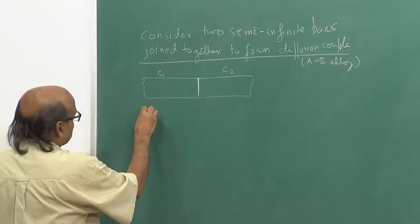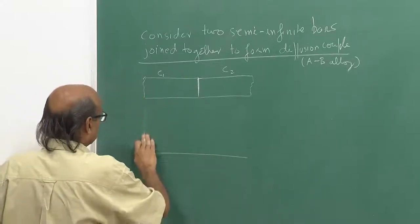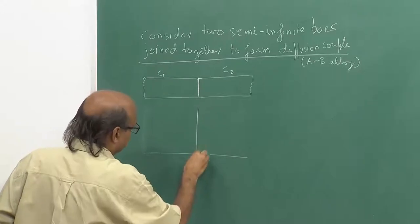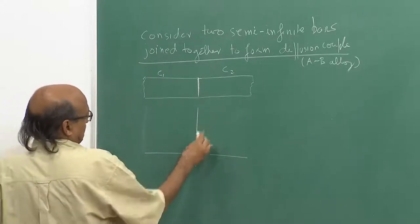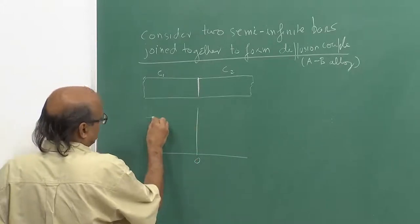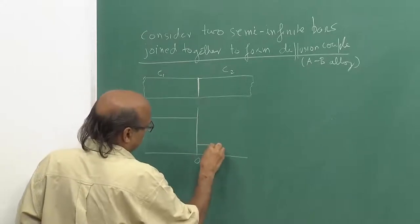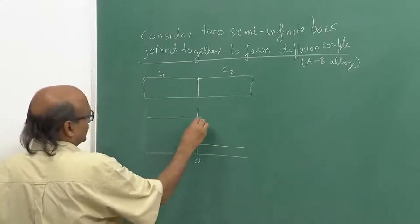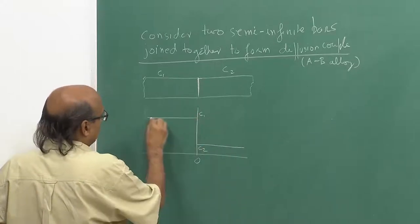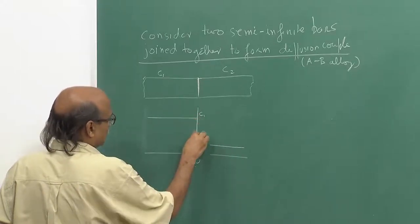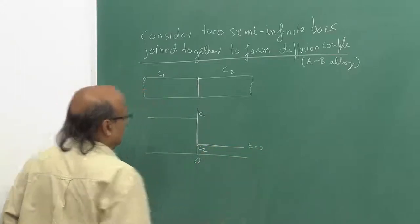On the left-hand side I have a concentration C1, and on the right-hand side I have a concentration C2. This is C1, this is C2, and this is the concentration profile at T equal to 0.